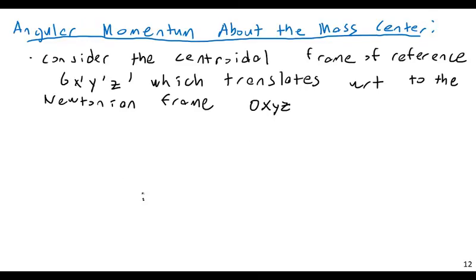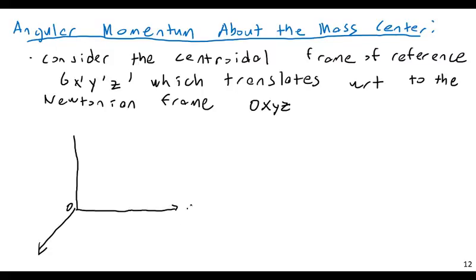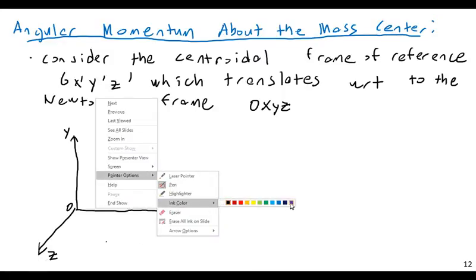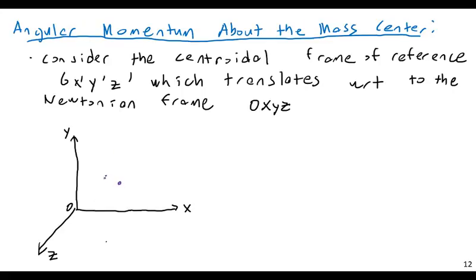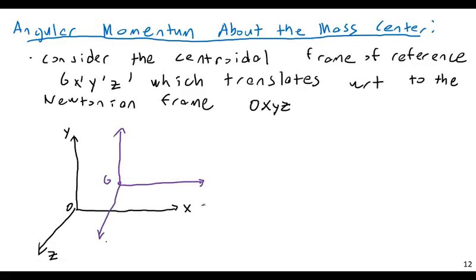So let me draw the Newtonian frame first. In general, the centroidal frame is not a Newtonian frame. O, X, Y, Z — and then a local centroidal frame here. A frame generated about the centroid of the system of particles G, or the center of mass. Now X, Y, Z and X prime, Y prime, Z prime are pointing in the same direction, and there would be an R prime.